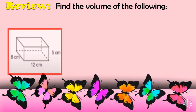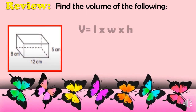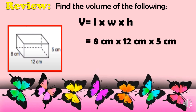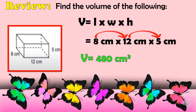For the next figure, we will again use the formula V = L × W × H. Substituting: 8 cm times 12 cm times 5 cm. Multiplying 8 × 12 × 5 gives us a volume of 480 cm³.